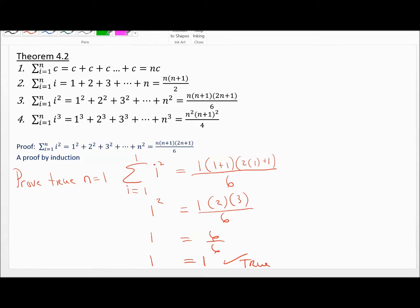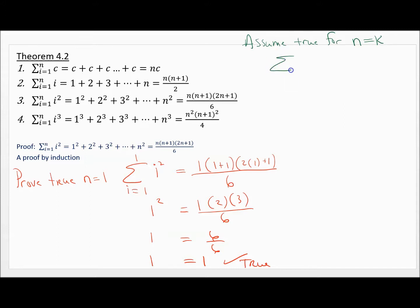Step 2 is you assume it's true for n equal to k. So what I'm assuming is that the sum from i=1 to k of i² equals k(k+1)(2k+1)/6. All I did was change the n's to k's. If you're assuming something is true, you're probably going to use it somewhere — and we will.